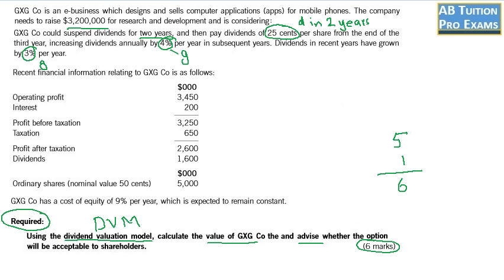Recent financial information relating to GXG Co is as follows. We are given the statement of comprehensive income. We have ordinary shares nominal value 50 cents. This is important because it tells us that the number of total shares is 5,000 divided by 0.5 which makes it 10,000. GXG Co has a cost of equity 9% so this is our ke which is expected to remain constant. I think we are ready to answer the question.